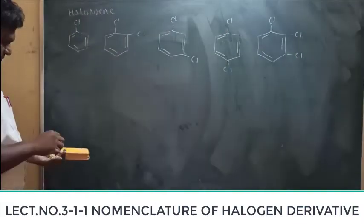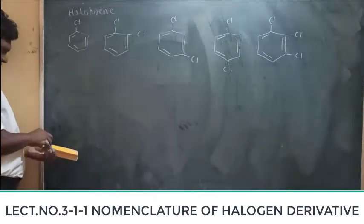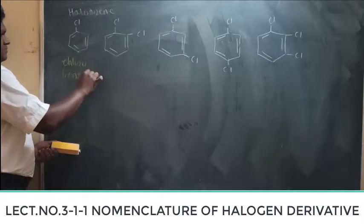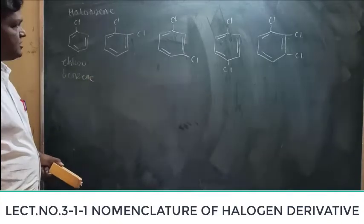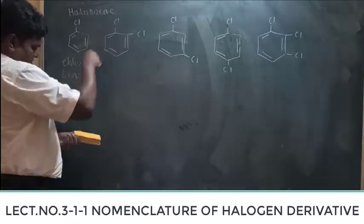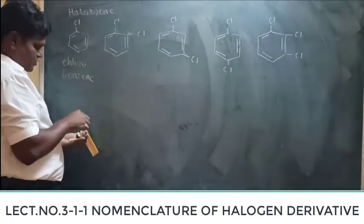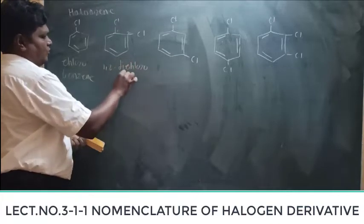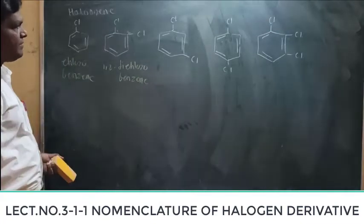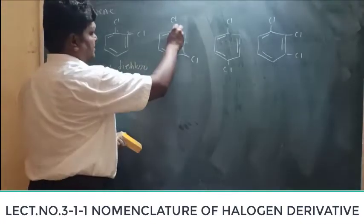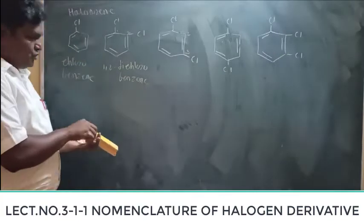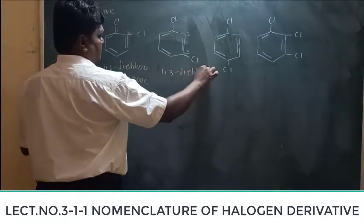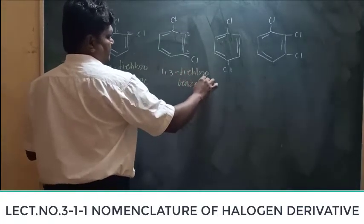Now for haloarenes — the first example: the common name is chlorobenzene. For the dihalogen derivative of haloarenes, this is position one and position two, so the IUPAC name is 1,2-dichlorobenzene. For the next compound, numbering gives one, two, three — so the IUPAC name is 1,3-dichlorobenzene.